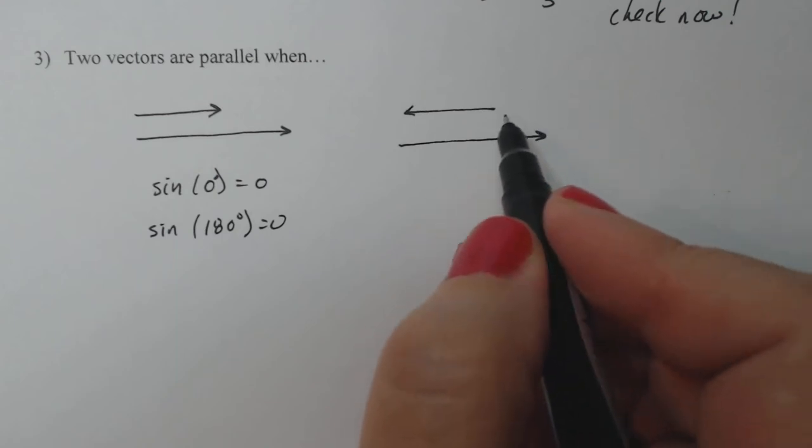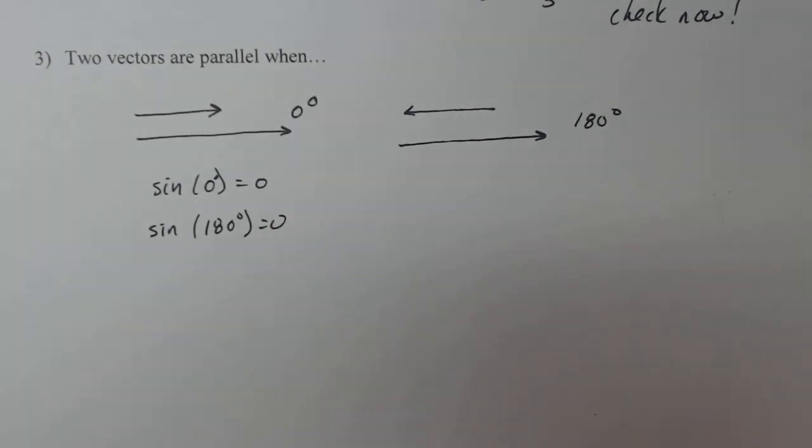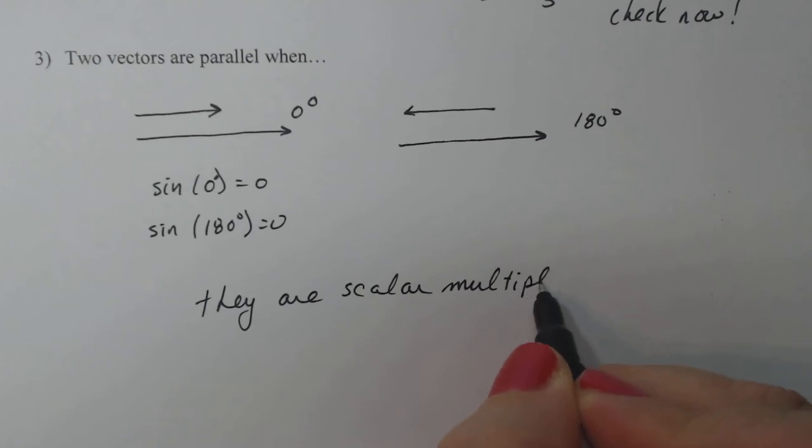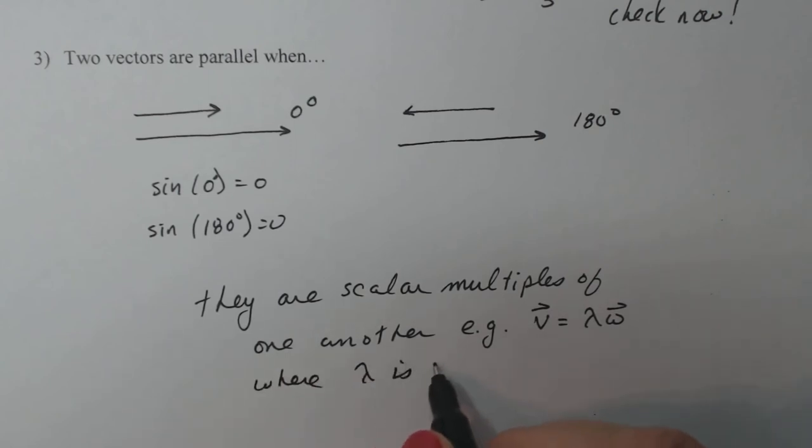The cross product is zero because the angle between parallel vectors is zero or 180, and the sine of zero is zero and the sine of 180 or pi is also zero. Now I would never, as a mathematician, ever talk about the cross product being zero because it's not a scalar. But I would say two vectors are parallel when they are scalar multiples of one another. In other words, or for example, I have V equals lambda times W where lambda is a real number, any real number that you want.